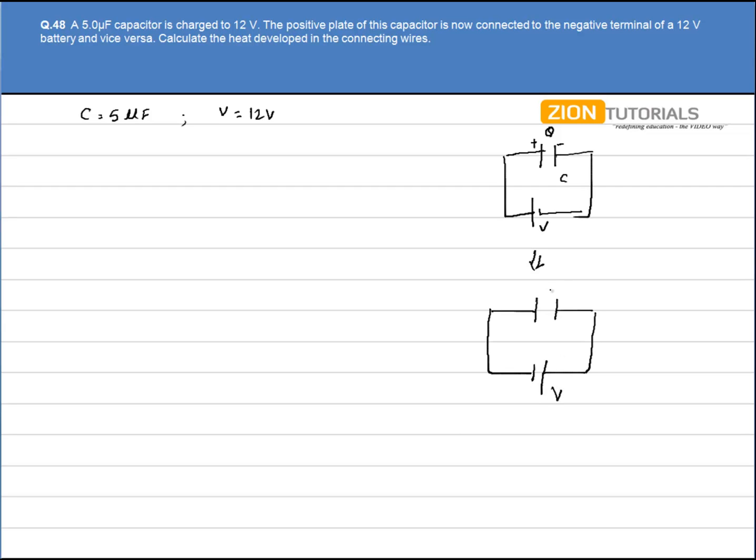Potential is same and now the charge will again be Q because capacitance is same but the polarity will be changed. Now this plate will have negative charge and this plate will have positive charge.